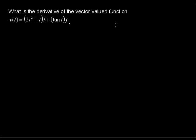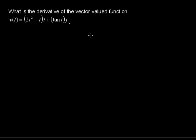In this video, I'll talk about taking the derivative of a vector-valued function. Here we have the vector-valued function v of t equals 2t squared plus t, times i, plus tangent of t, times j. So we have our i and j components, so this is a vector.